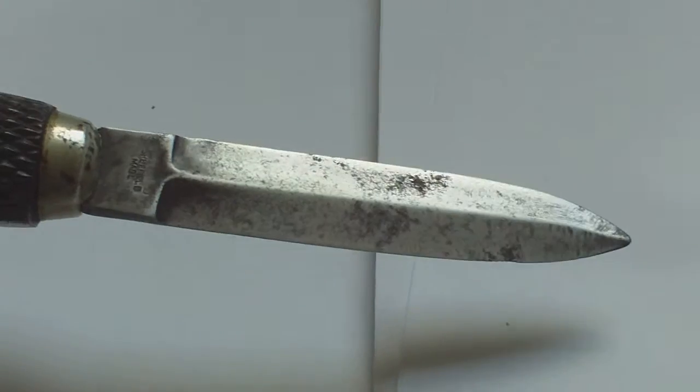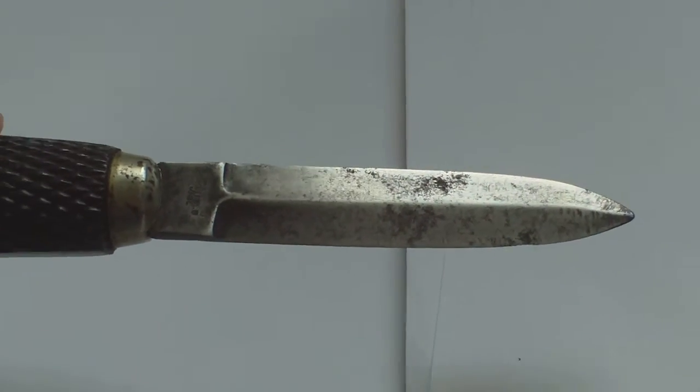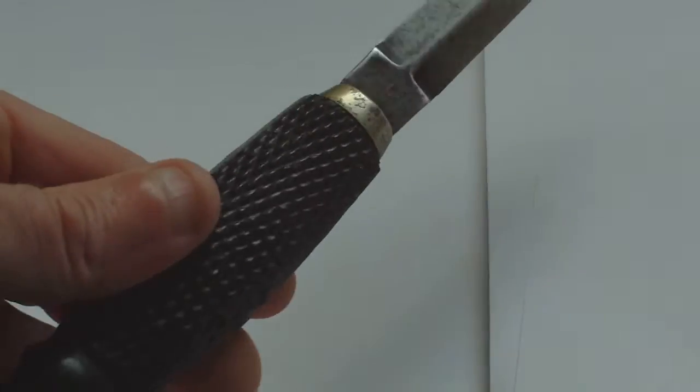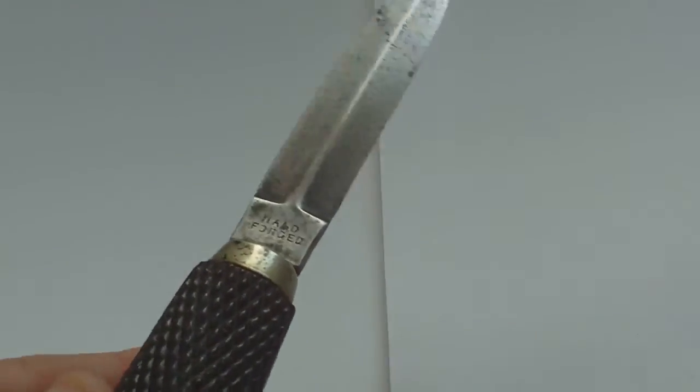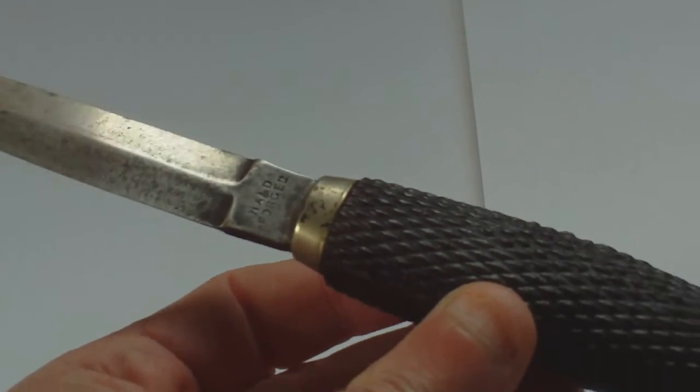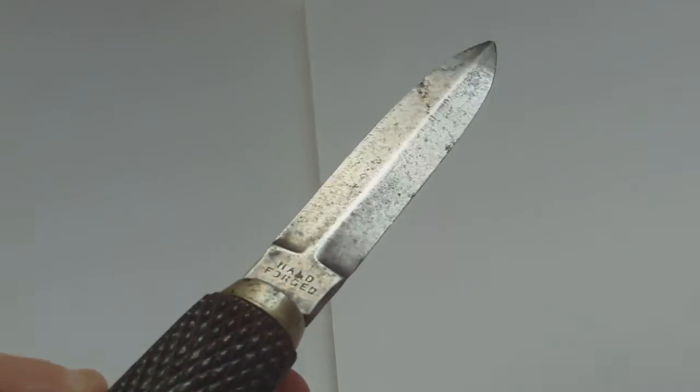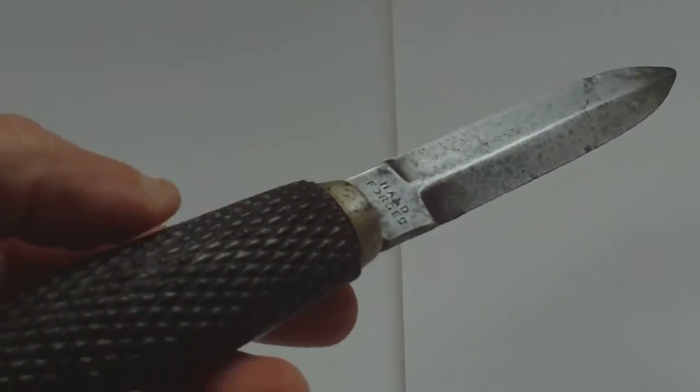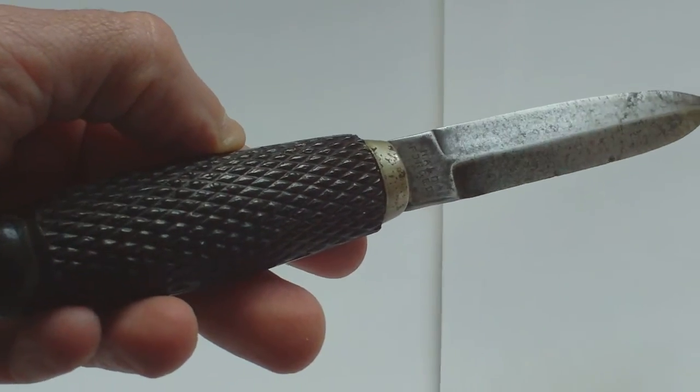Quite often the scabbards don't survive. If it had a scabbard you'd be looking at £300 and something currently in the UK. So a nice item, World War One British private purchase trench fighting knife.